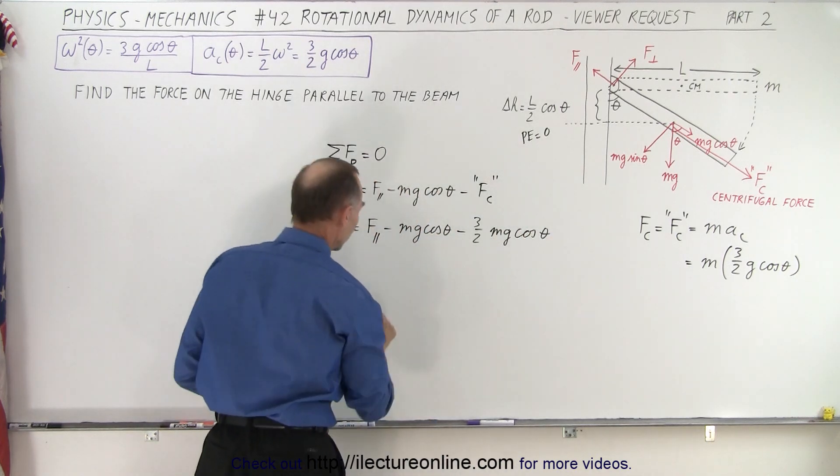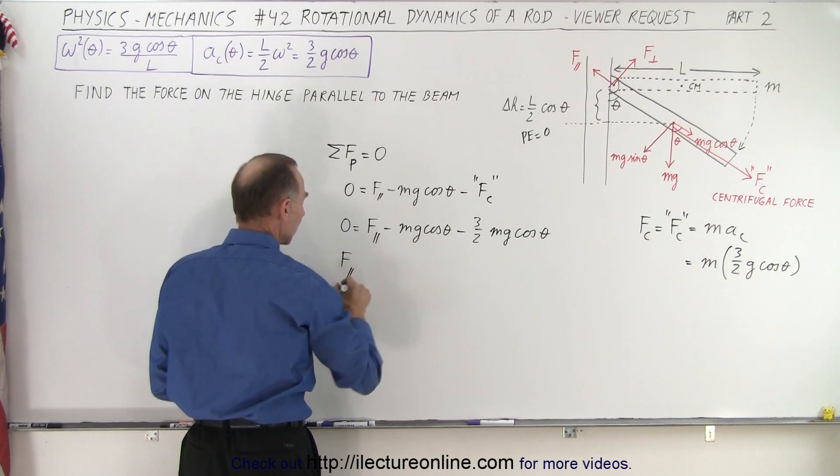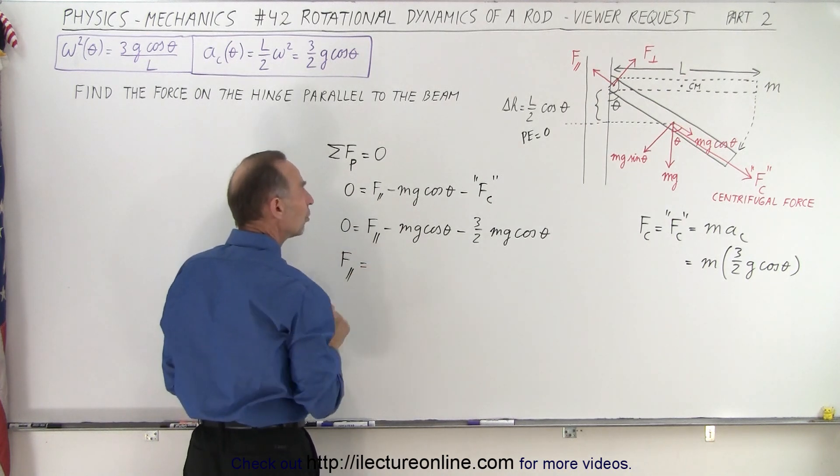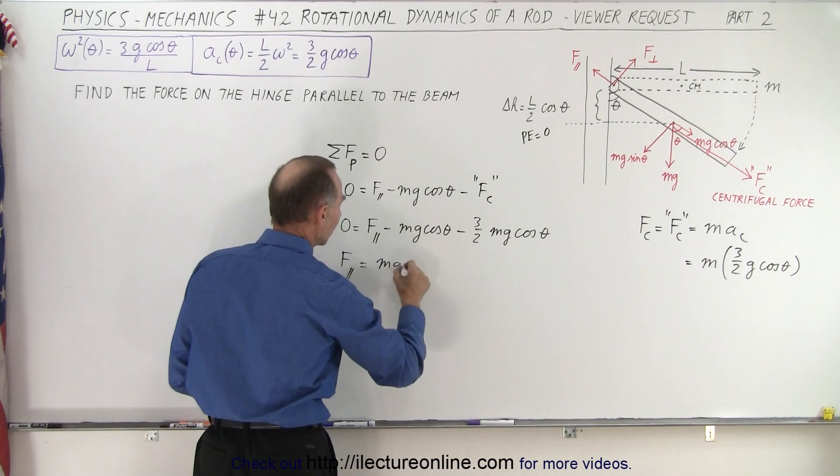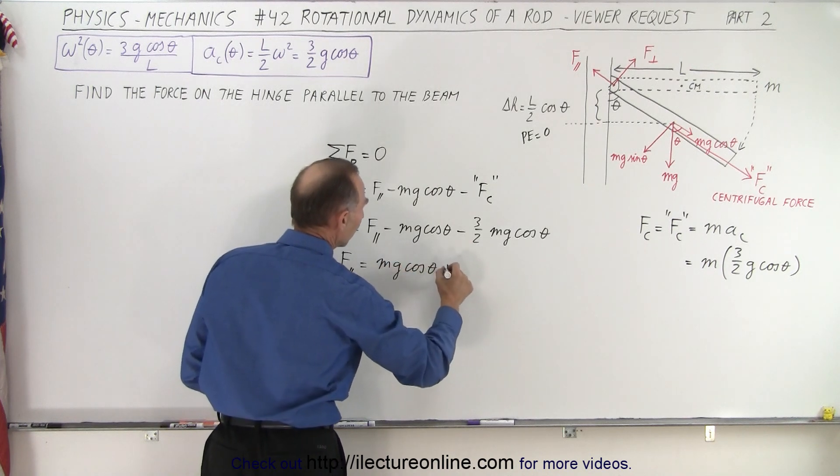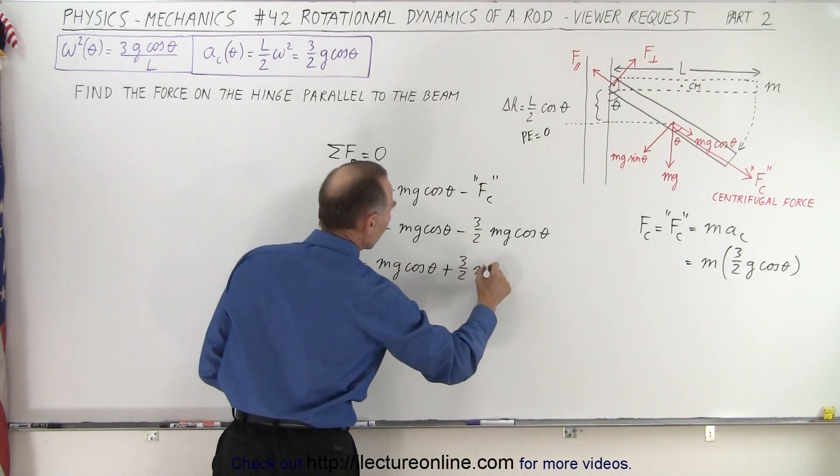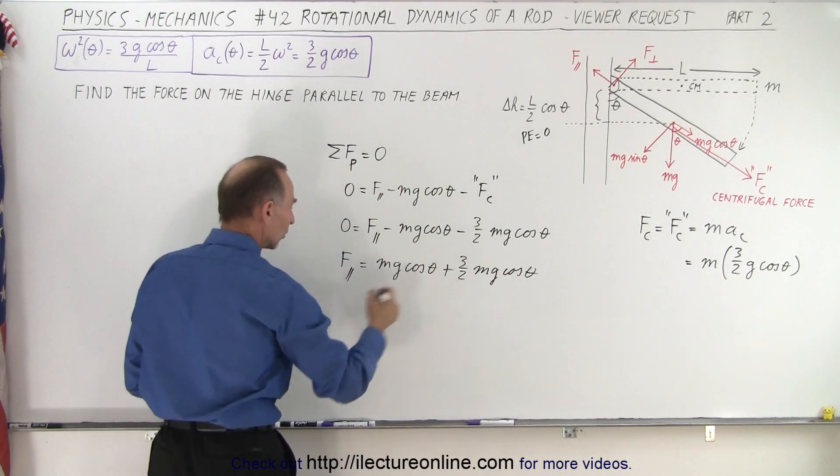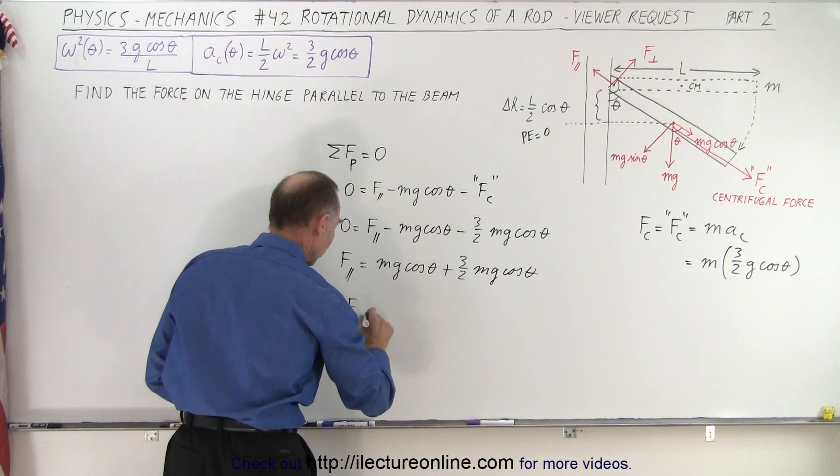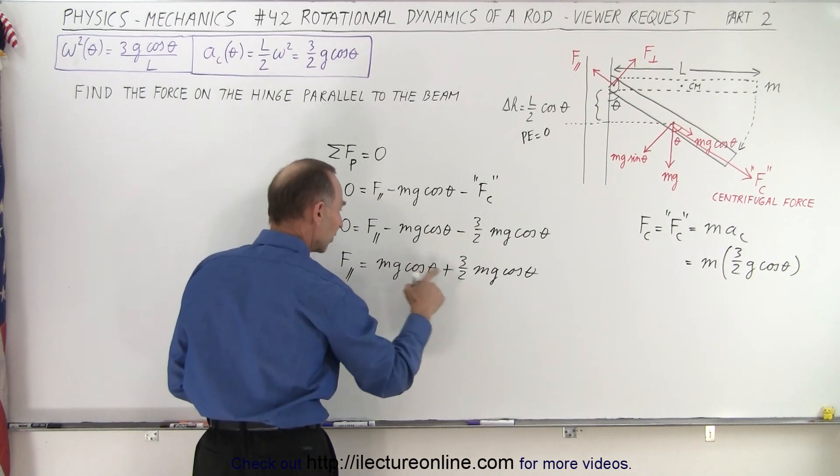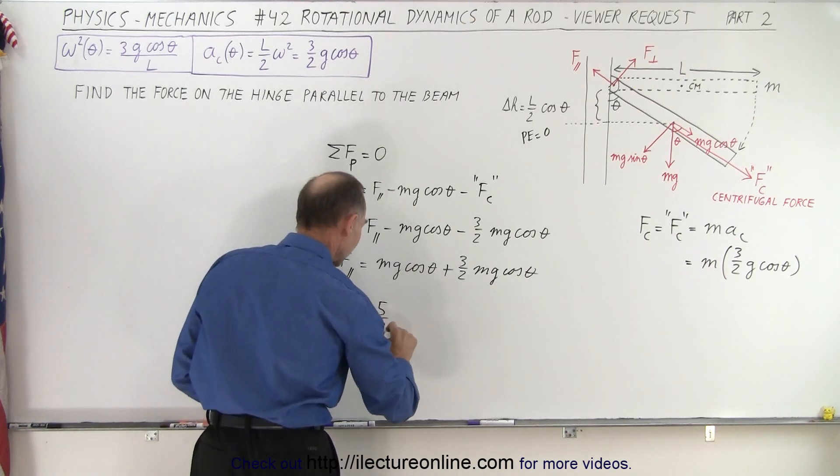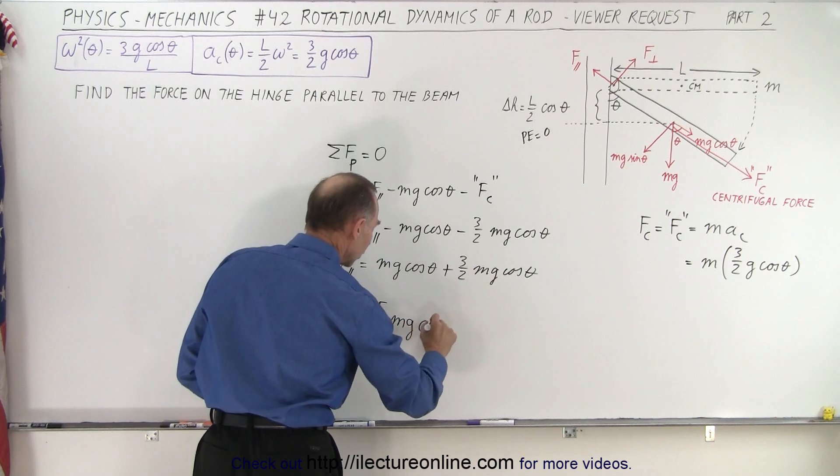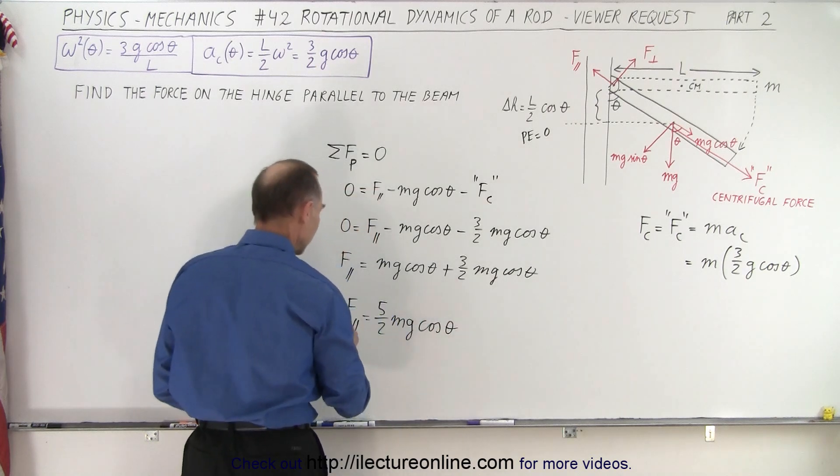Now rearranging the terms a little bit, we now have the force parallel to the beam on the pin is equal to mg cosine of theta plus three over two mg cosine of theta. And when we add those together, we get the parallel force is equal to two halves and three halves or five halves mg cosine of theta.